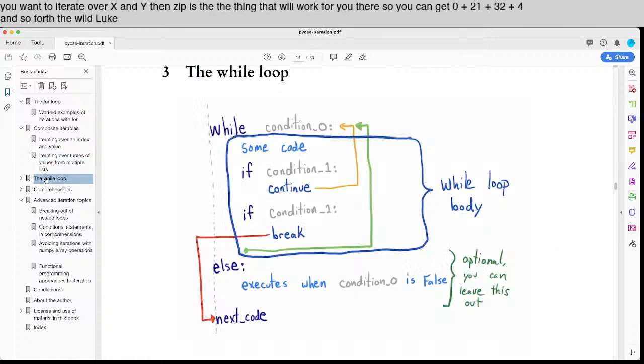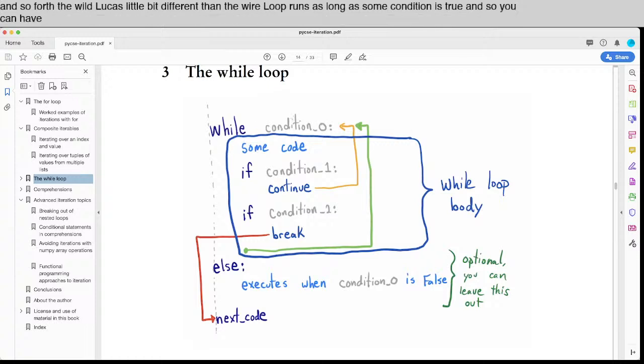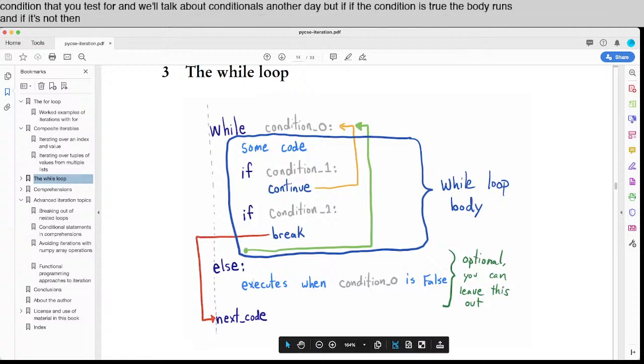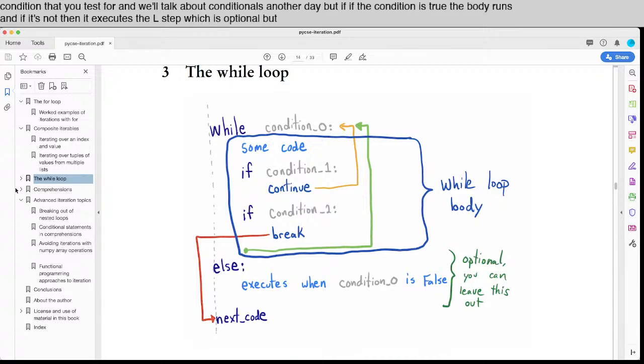The while loop is a little bit different. The while loop runs as long as some condition is true. And so you can have a condition that you test for, and we'll talk about conditionals another day. But if the condition is true, the body runs. And if it's not, then it executes the else step, which is optional, but interesting that it exists.